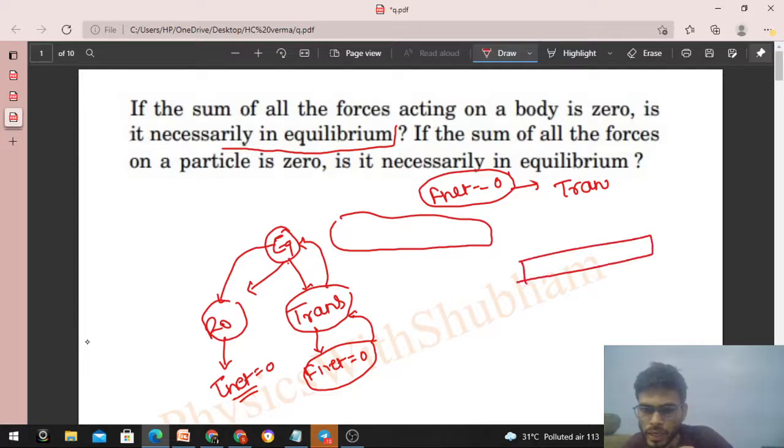Let me take an example. There's a body like this and two forces are acting on it, one upward and one downward. Then what is the net force on the body? That will be zero.